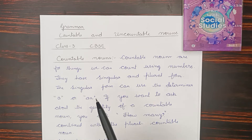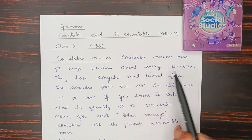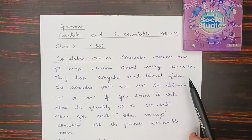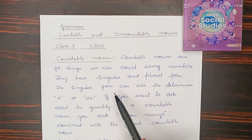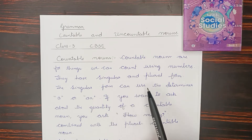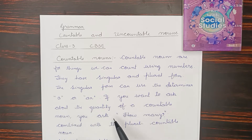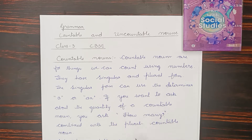Let us know about countable nouns. Countable nouns are for things we can count using numbers. They have singular and plural form. The singular form can use the determiner 'a' or 'an'. If you want to ask about the quantity of a countable noun, you ask 'how many' combined with the plural countable noun.